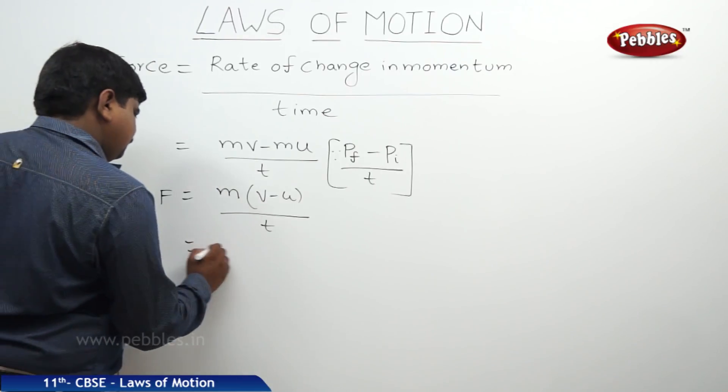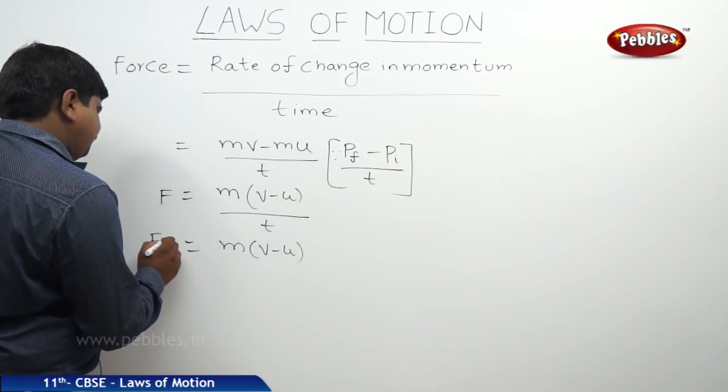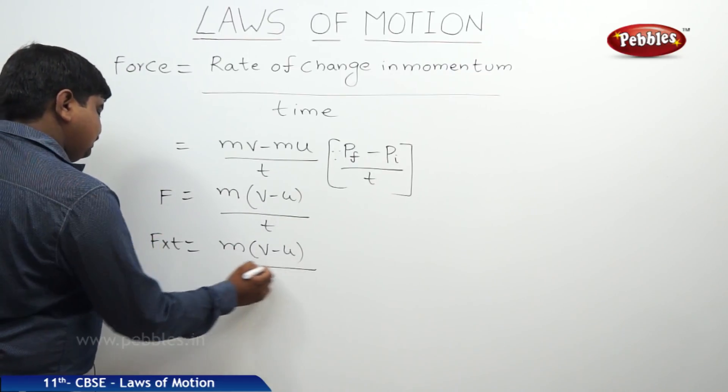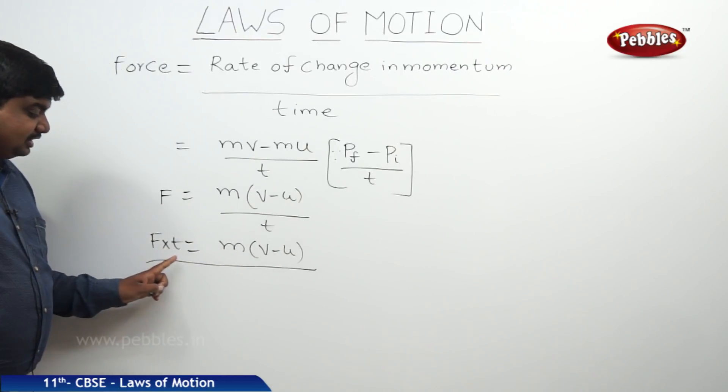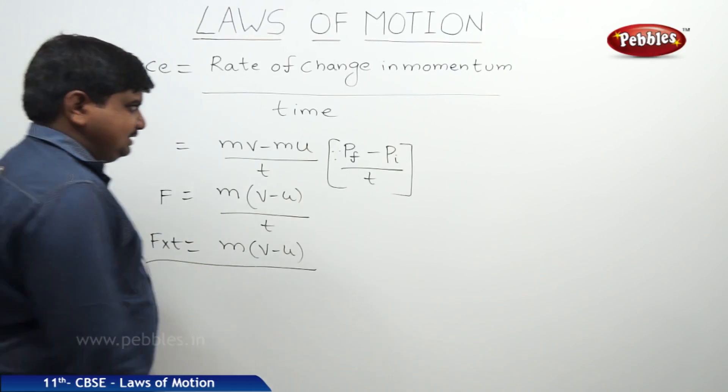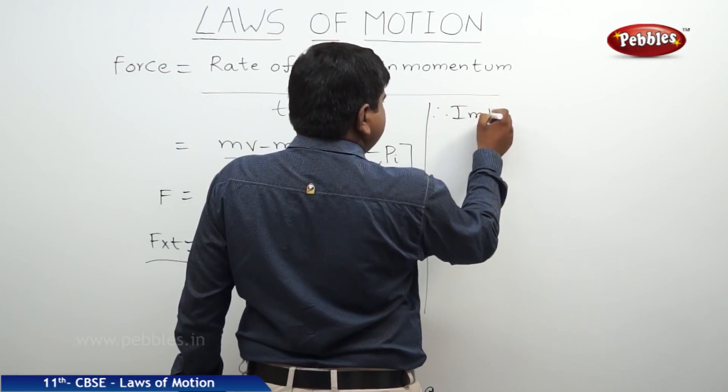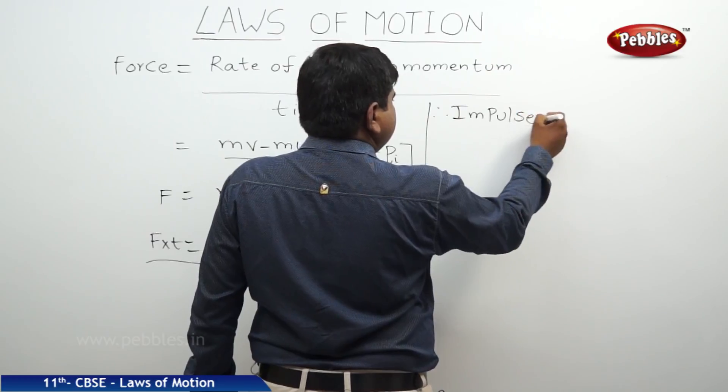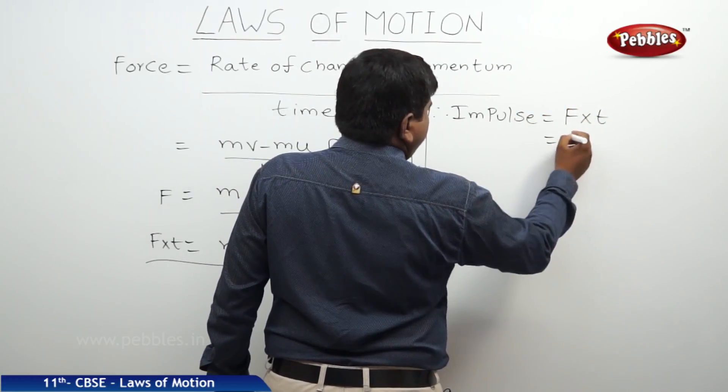So M into V minus U is equal to F into T. This change in momentum is equal to force into time. This force into time is called impulse. Therefore, impulse is equal to force into time, or FT.